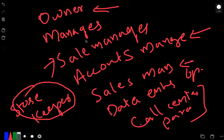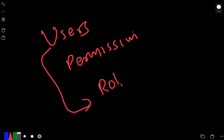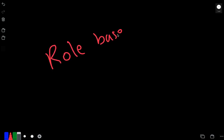This is easy to understand conceptually, but there are three or four things we must know. First, there are users and there are permissions. When we manage this, users will have certain roles — so we will have role-based permission — and they also have record-based permission.